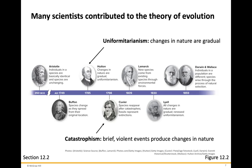Cuvier proposed that species will reappear after catastrophes, and that fossils represent extinctions. Then all the way up through Darwin and Wallace, who proposed that individuals in a population are different, and that species arise through the process of natural selection.